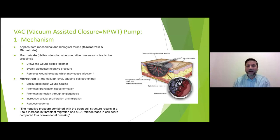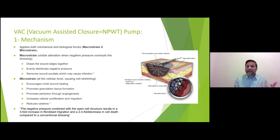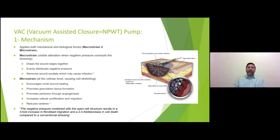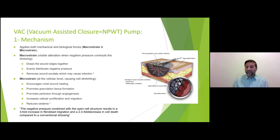Macro strain is what you can see with your own eyes: it draws wound edges together, distributes negative pressure across the wound, and removes exudate — which may reduce infection, though this has not been proven. Micro strain is probably where most believe it works: encouraging wound healing by promoting granulation tissue and new angiogenesis, increasing cellular proliferation and migration into the wound, speeding up healing, and reducing edema — though again this is not 100% proven.